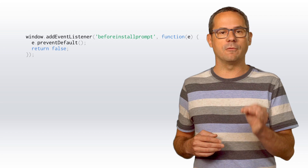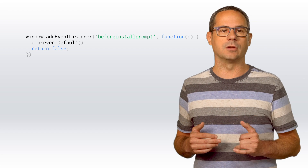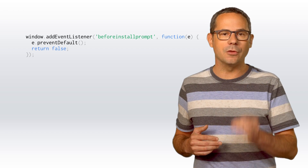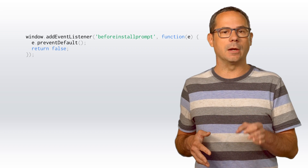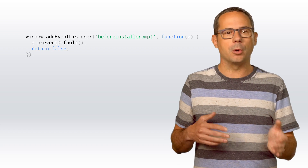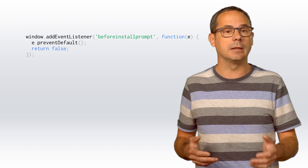You can also prevent the banner from appearing by calling preventDefault on the event object. In the future, this will allow you to defer the banner until later — for example, after the user has completed a specific action. If you set the start URL in your manifest to include a query string like UTM source equals manifest, you can use analytics to track how often people are launching your app from their home screen.